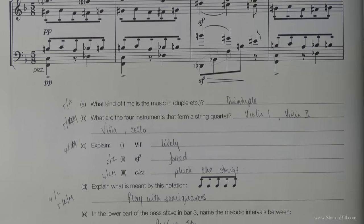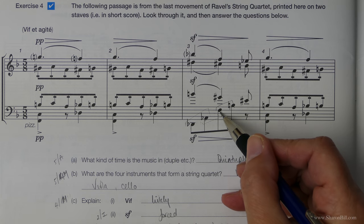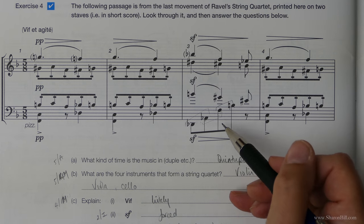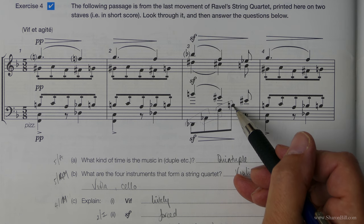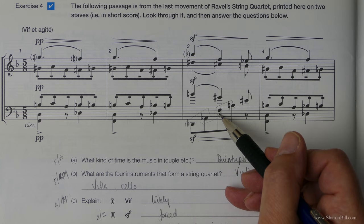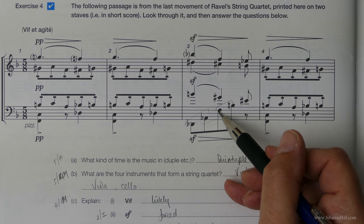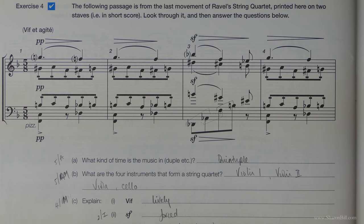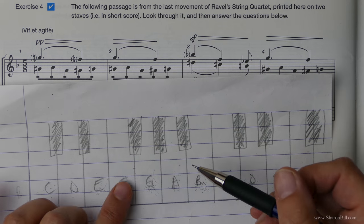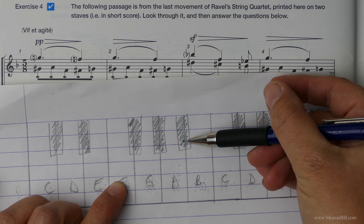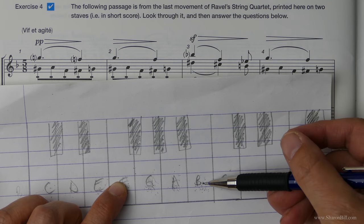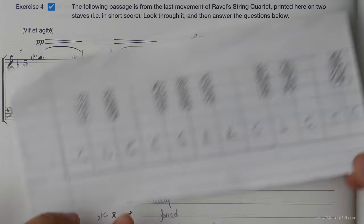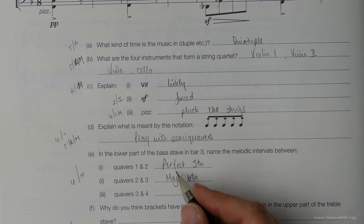And then here we've got quavers three to four. So we're just looking in the bass part here. And we've got one, three, fourth. We've got a fourth. Now if F is considered to be our keynote, F to B flat would be a perfect fourth. We've raised the B flat with the natural sound. We've extended the interval. We've augmented it. And so we've got an augmented fourth.